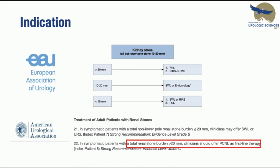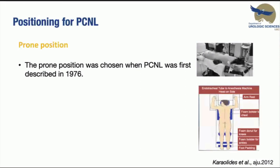When it comes to positioning for PCNL, when PCNL was initially described in 1976, the prone position was chosen because it was believed to be the safest way to avoid damage to the colon and visceral organs. The technique was standardized as a two-stage procedure: the first part with the patient supine for anesthesia and retrograde access, then the patient repositioned prone for the main part of the procedure.